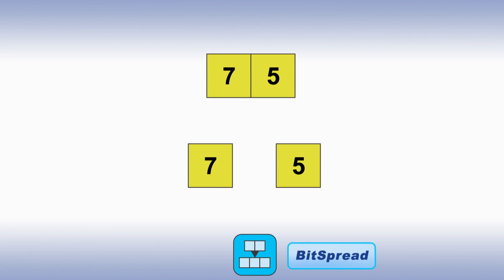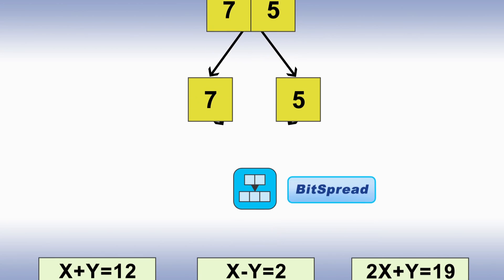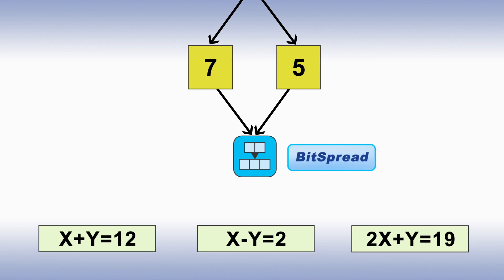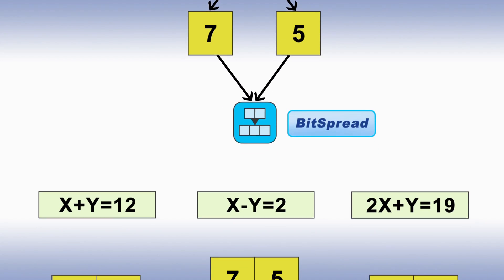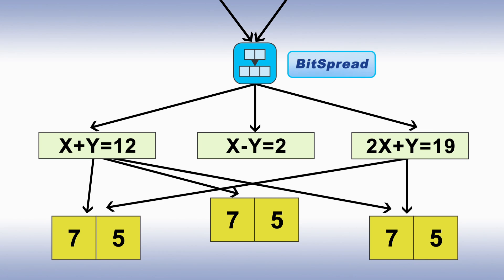The encoding process is key. In a simplified example, data is split into fragments — 7 and 5 — and sent to AmplaData's bit spread encoder. The encoder generates as many equations as needed for the desired redundancy. Here, we can lose any one of the three fragments and still reconstruct the data.